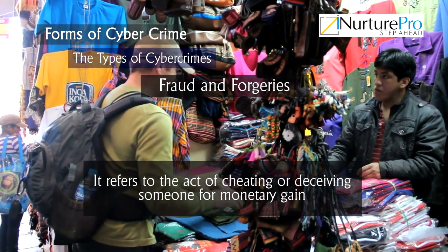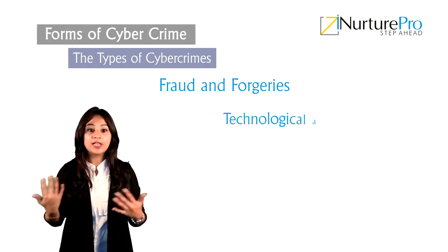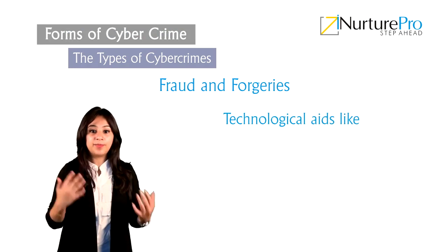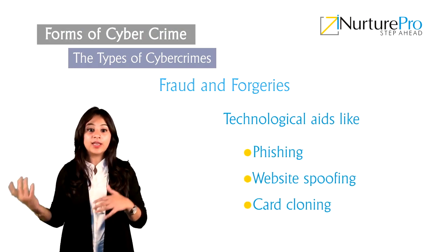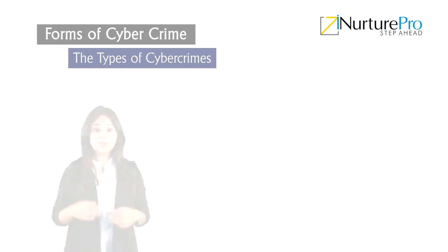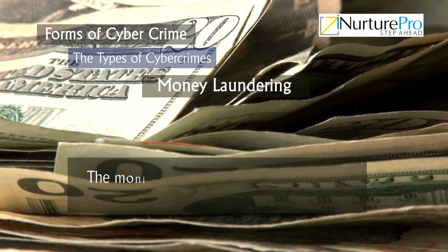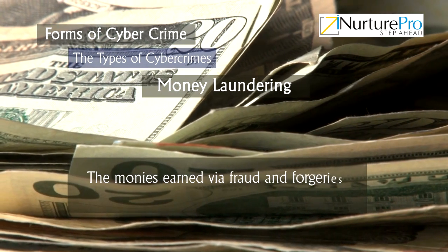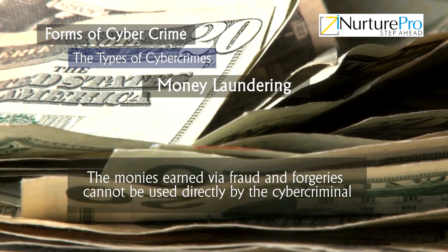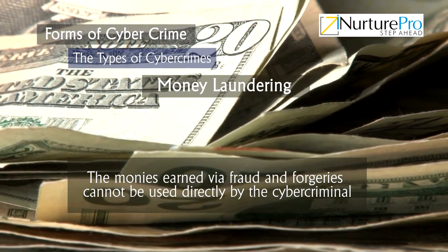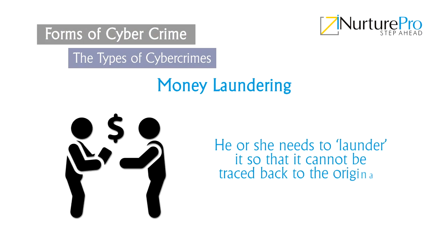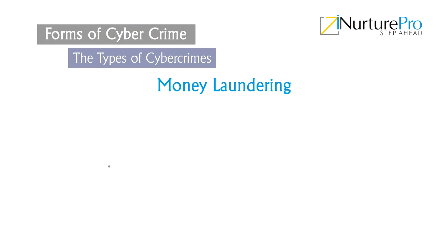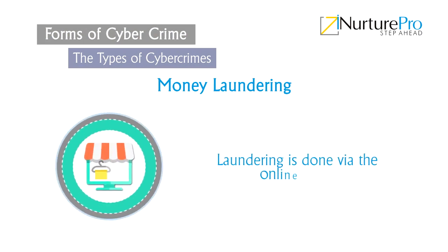Fraud and forgeries refers to the act of cheating or deceiving someone for monetary gain. Technological aids like phishing, website spoofing and card cloning are used in this crime. Money laundering — the money earned via fraud and forgeries cannot be used directly by the cybercriminal; he or she needs to use a launderer so it cannot be traced back to the original source. Laundering is done via the online route.